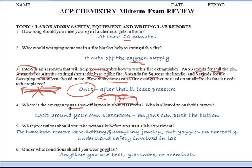Alright, number four. Emergency gas shutoff. Take a look around your own classroom. Obviously, I'm doing this for all the kids in all different classrooms. So look around your classroom. Find it. Who's allowed to push the button? Anyone. Anyone can push that button. Whoever's closest should hit it, and then all the gas shuts off.